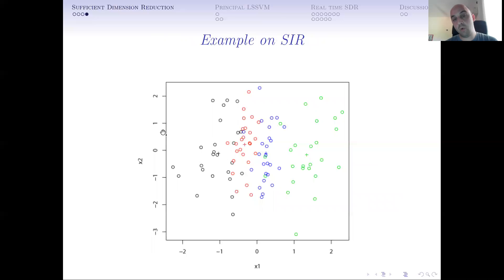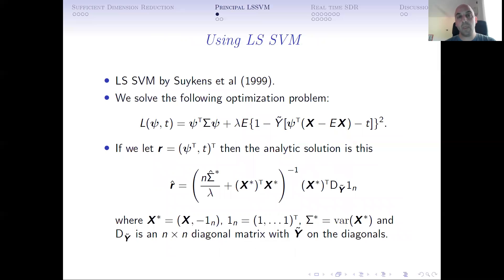Support vector machines—what they do is that since we are discretizing y, it seems like you can use classification methods to find the hyperplane that separates the slices. If you try to put a hyperplane between the black and the red points, for example, this line is going to be parallel to x2, but then the normal vector of that line is going to be the one being parallel to x1. And that's what principal support vector machine does. It uses this discrete version of y to construct support vector machines, takes the normal vectors, and these normal vectors help you to estimate the central subspace.